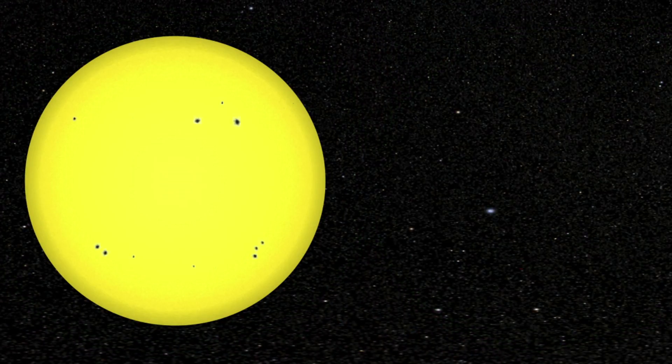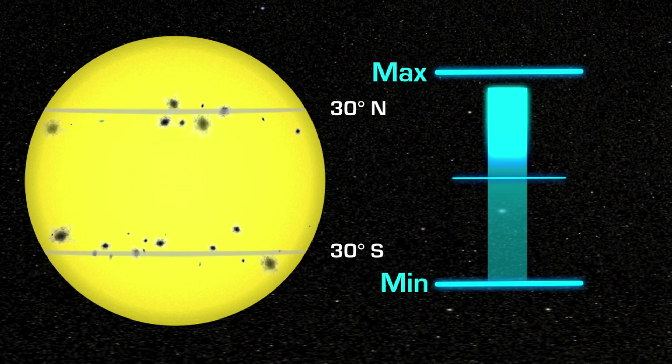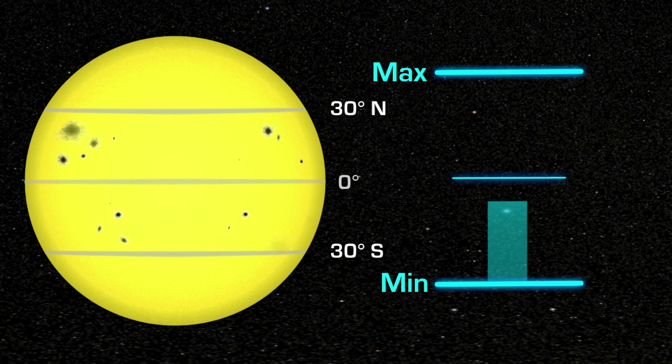During this cycle, the location of the sunspots also changes. They are at middle latitudes during solar maximum, and move closer to the equator as the Sun approaches solar minimum.